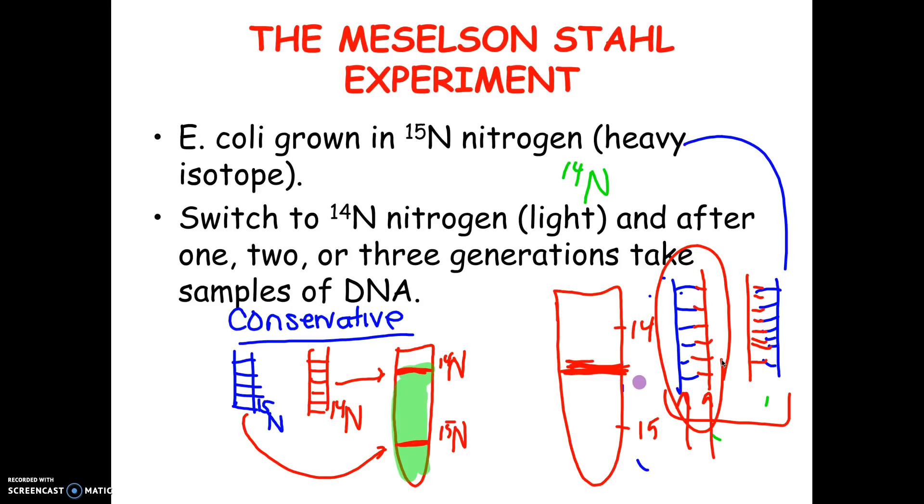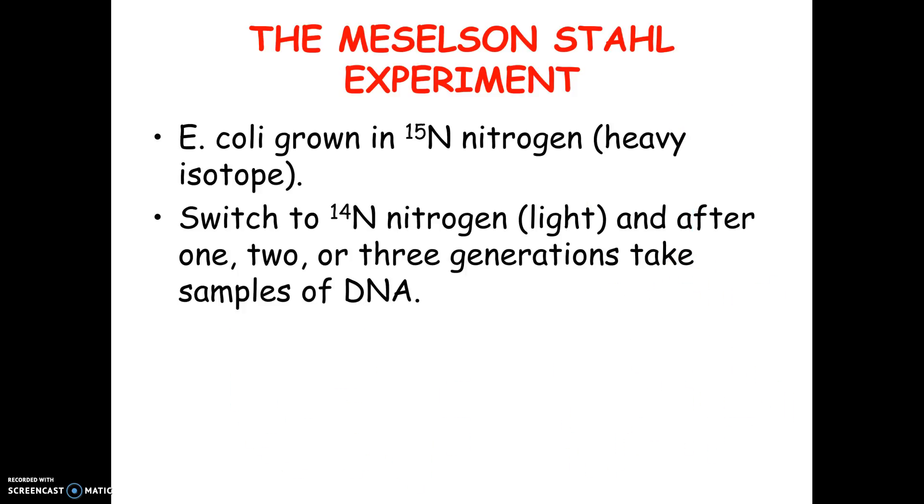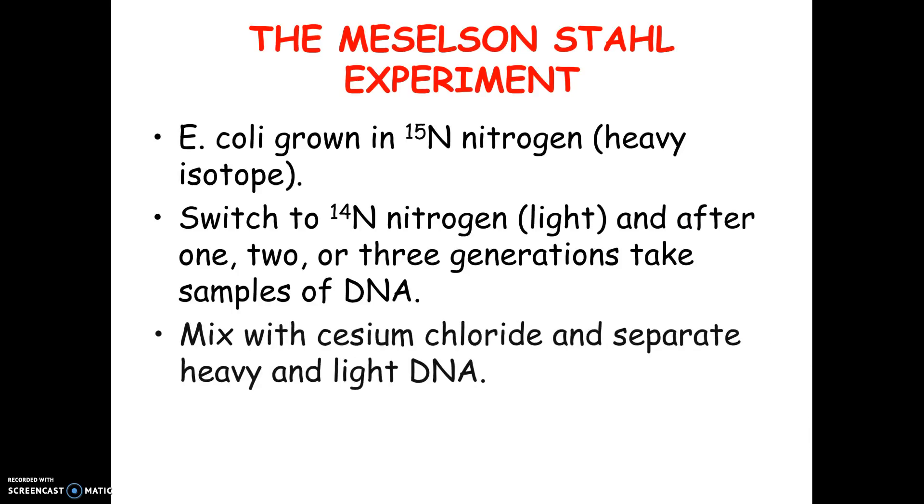Now, they actually let this go one more generation, and if you do that, you'll actually see that this will separate again, and you're going to get basically this. You're going to get still one band in the middle, and then the two new ones that form will actually form another band at the top. You would never get a band at the bottom again. So this is how they proved semi-conservative replication. There's a picture on the next slide of it. You don't have to know cesium chloride. It's just the chemical they use to break up the bacteria.